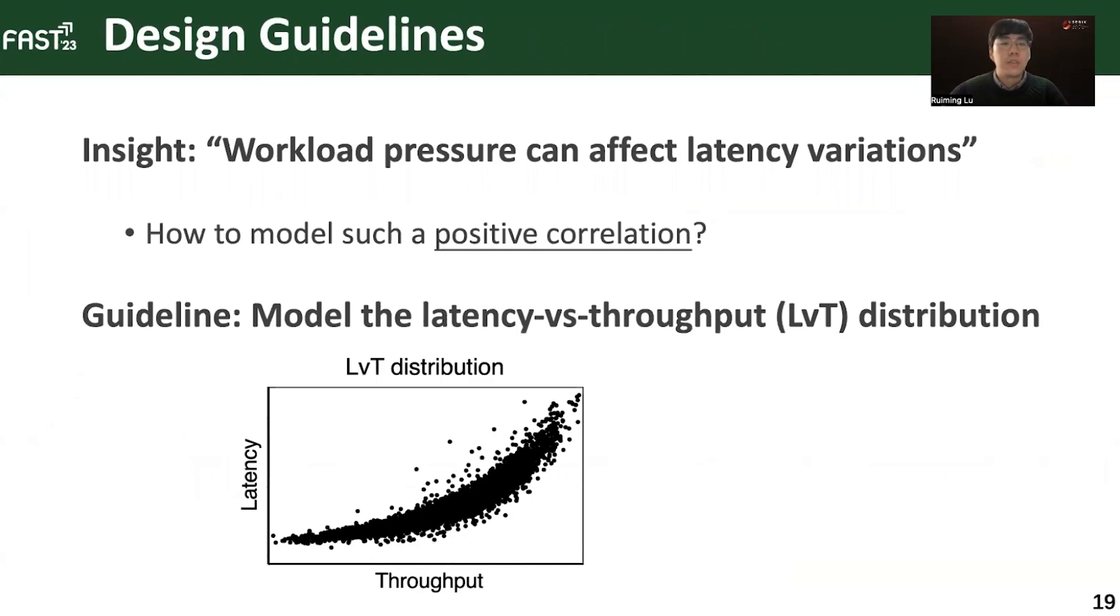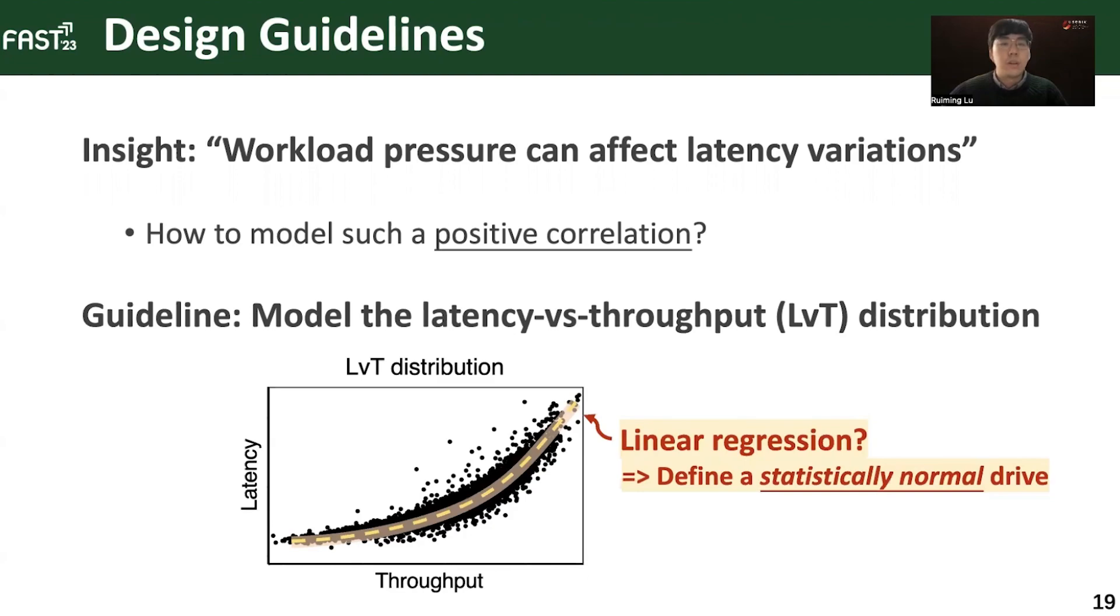As we can see in this plot, the correlation can be fairly simple. We can use a linear regression model to describe such a relationship. In other words, we use the regression model to define a statistically normal drive and subsequently use its upper bound as the adaptive threshold for various environments.